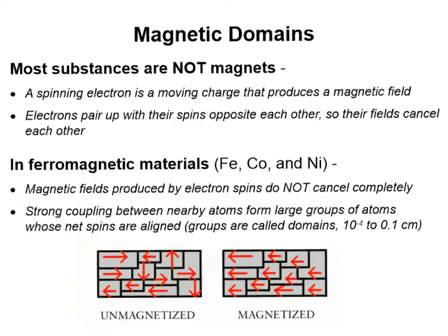Now let's talk a little bit about what we call magnetic domains. Most substances you'll notice are not magnets. Most substances cannot be magnetized, and the reason is if we start to think about things on an atomic level and think about the electrons involved. If we have a spinning electron, that spinning electron is a moving charge and it is producing a magnetic field, that little electron.